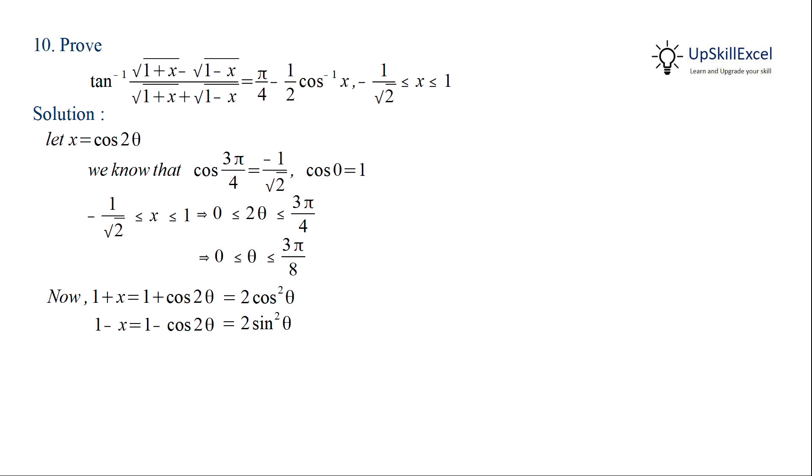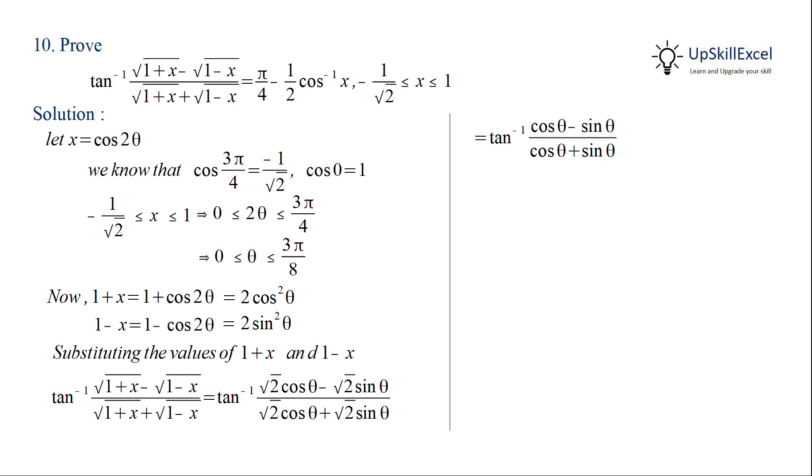Substituting 1 plus x and 1 minus x on the left hand side, we get tan inverse of root 2 cos theta minus root 2 sin theta divided by root 2 cos theta plus root 2 sin theta. Taking root 2 common and canceling gives tan inverse of cos theta minus sin theta divided by cos theta plus sin theta.